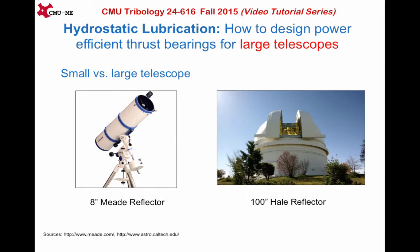What do we mean by large telescopes? The largeness or power of a telescope is measured in terms of its light-gathering capacity. Larger the aperture, larger the light-gathering capacity and larger the telescope. The 8-inch Mead reflector on the left, which can be found in the backyard of an astronomy enthusiast, is referred to as a small telescope, whereas the 100-inch Hale telescope from Caltech on the right is referred to as a large telescope. We will try to design bearings for the Hale telescope in this tutorial.